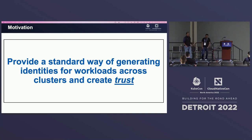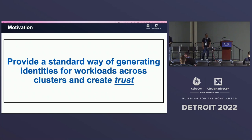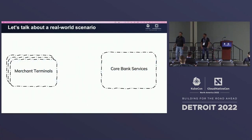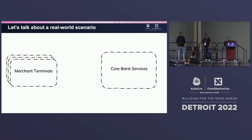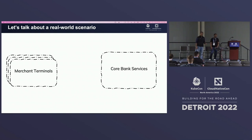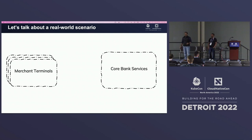As we started to think about the motivation for this session, we wanted to look at it purely from the perspective of what does it take to provide a standard way of generating identities for workloads across clusters and essentially build trust. Securing workloads, having the ability to generate an identity, and distributing trust across multiple different trust domains — that was the purpose with which we started thinking about the challenge.